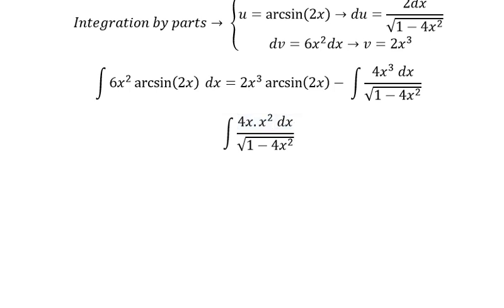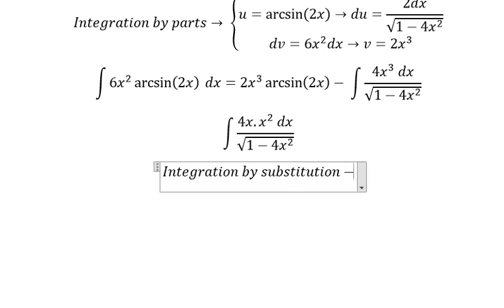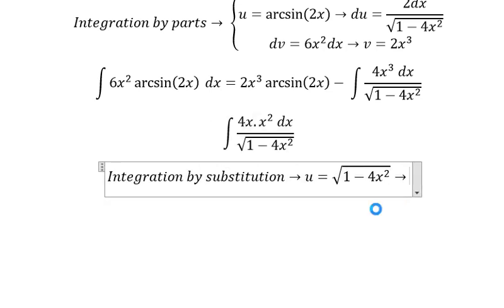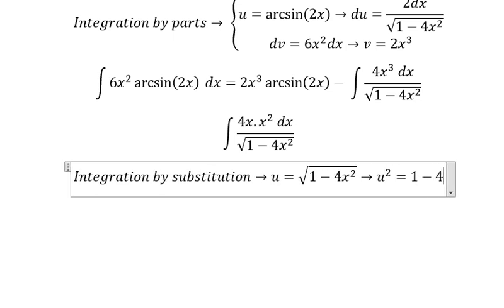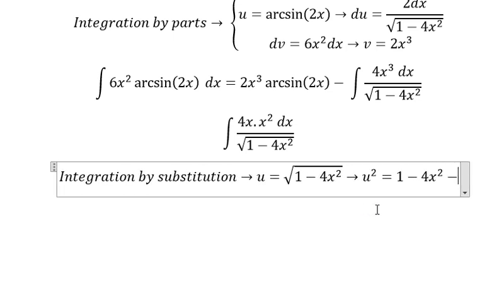Next we can use integration by substitution. We put u equal to the square root of 1 minus 4x squared. Squaring both sides, we have u squared equals 1 minus 4x squared, so 4x squared equals 1 minus u squared.